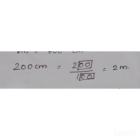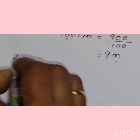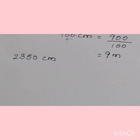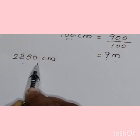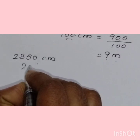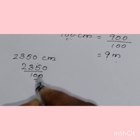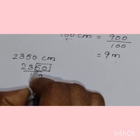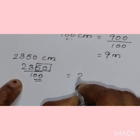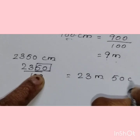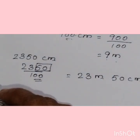Now, the next question: 2350 centimeters — we are going to convert this into meters by dividing by 100. Since 100 has two zeros, we take the last two digits from the right as the remainder. So 2350 ÷ 100 gives 23 meters and 50 centimeters.